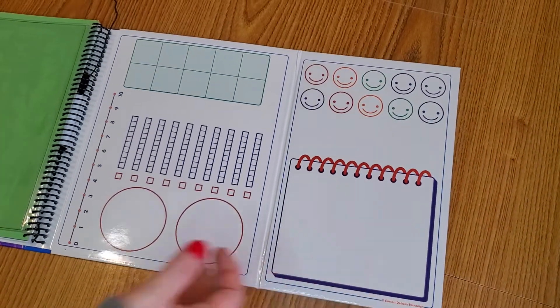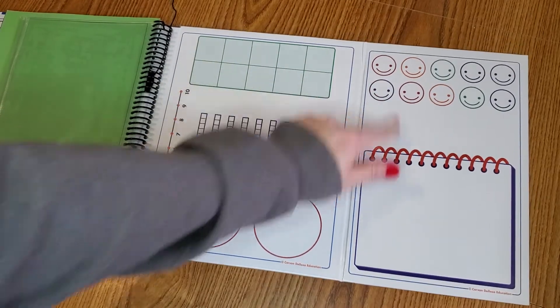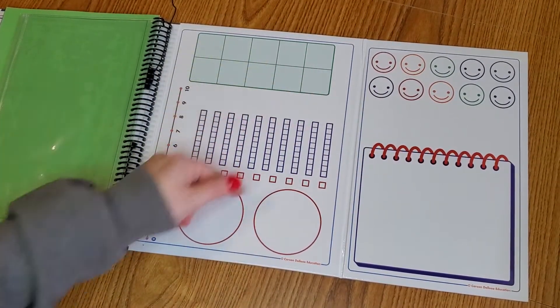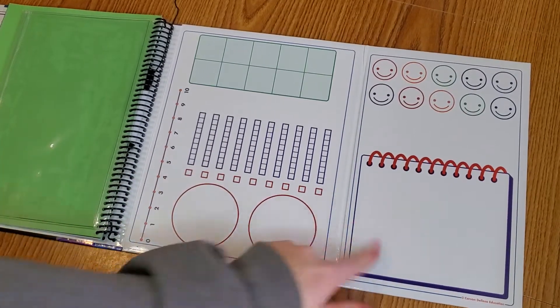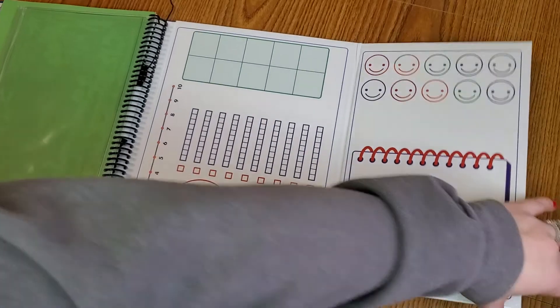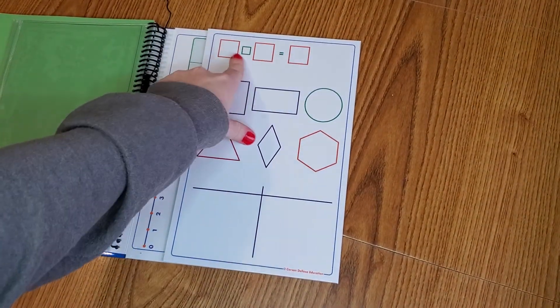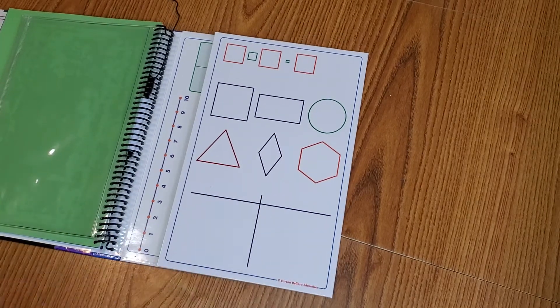Like in one of the problems I was skimming through before I did this review, it says to color however many happy faces. And then it's like an additional problem. There's the ten block chart, the number line, some ten block circles, a notepad, and then this plus this or minus equals whatever number. Some shapes, and then I guess that's like a graph.